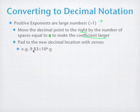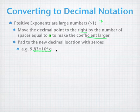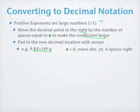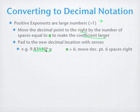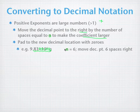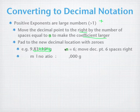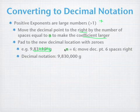Moving 6 spots to the right gives us a large number, but we've got 4 spots that had no digit above them, so we pad with zeros and get 9,830,000 grams.